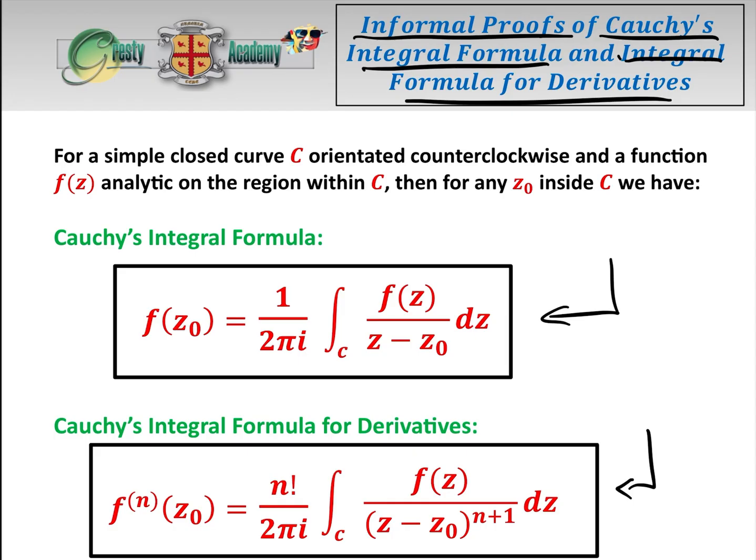So basically what it says is, for a simple closed curve C orientated counterclockwise, and a function f of z which is analytic, i.e. differentiable on the region within C, then for any z0 inside C, these two formulae apply, and they're very powerful, and there's a lot of exam questions asked on them.